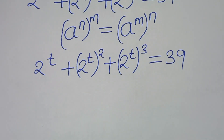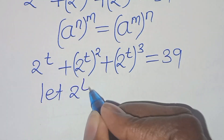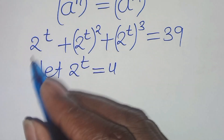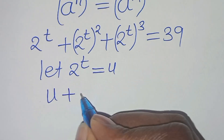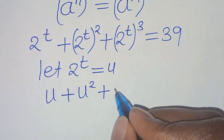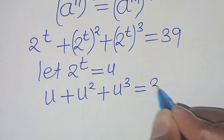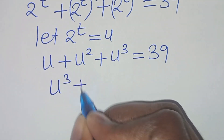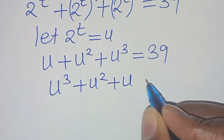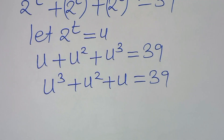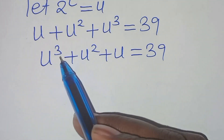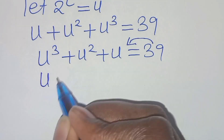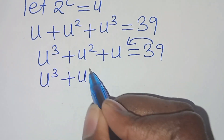The next step is that we can let 2 to the power of t be equal to u. Substituting u for 2 to the power of t, this becomes u plus u squared plus u to the power of 3, which is equal to 39. We can rearrange this equation as u cubed plus u squared plus u, which is equal to 39. This is a cubic function or a polynomial of degree 3.